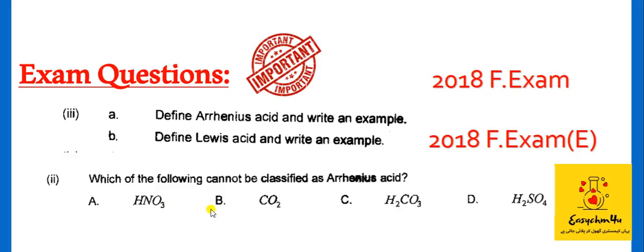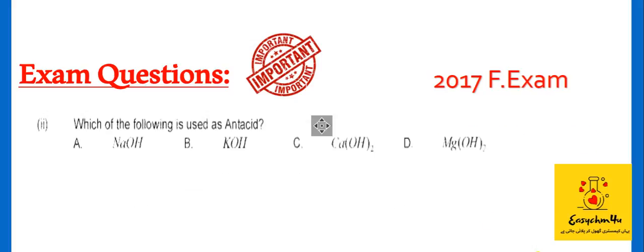And 2018 final exam, in the evening paper, we have some acids and bases. And we have to classify them, which of the following cannot be classified as Arrhenius Acid. Students, you have to write Arrhenius Acids for all equations. And we will produce all these protons. But we cannot produce carbon dioxide protons. First of all, we have to write definition of this acid. And we have to write equation for these four.